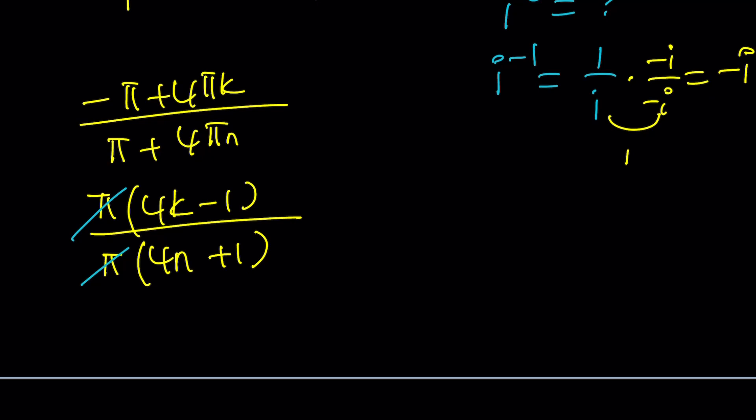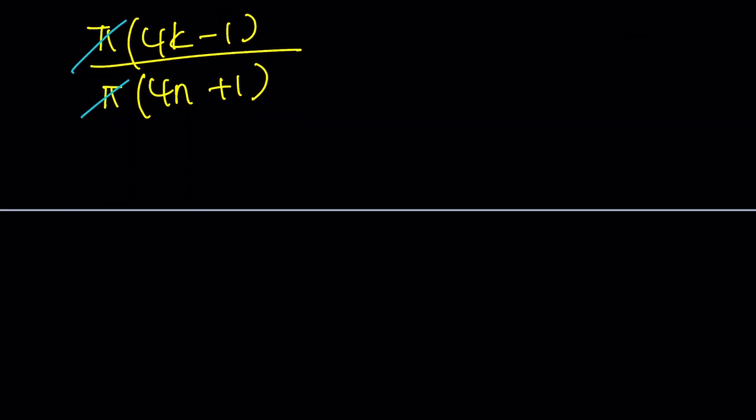Uh-oh. What does that mean? Pi cancels out and we get something simple. So this tells you that the solutions are real numbers. Yes. Because k and n are integers, 4k minus 1 and 4n plus 1 are real numbers. So we've got a real number. Interesting, right? You take i to a real power and it just negates. You probably knew that already. But let's just pretend we don't.